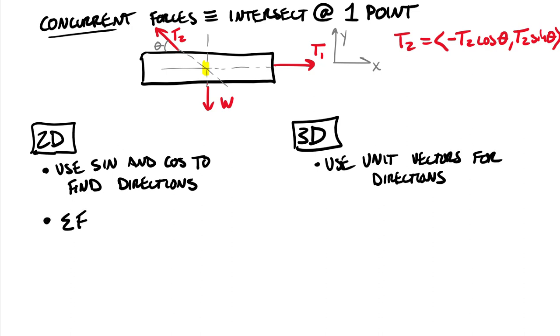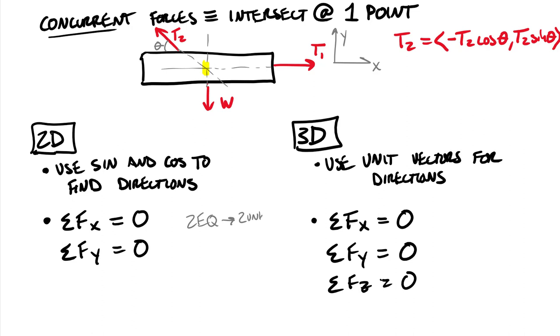And so for two dimensions, we have two fundamental equations, sum of forces in the x equals zero, and sum of forces in the y equals zero. So two equations can satisfy two unknowns. In three dimensions, probably no surprise, we're going to add one more force equation. So sum of force in the x equals zero, sum of the force in the y equals zero, and sum of the forces in the z equals zero. So we have two equations, up to two unknowns, here for two dimension, and then we have three equations, allowing for up to three unknowns, for our three dimensional problems.